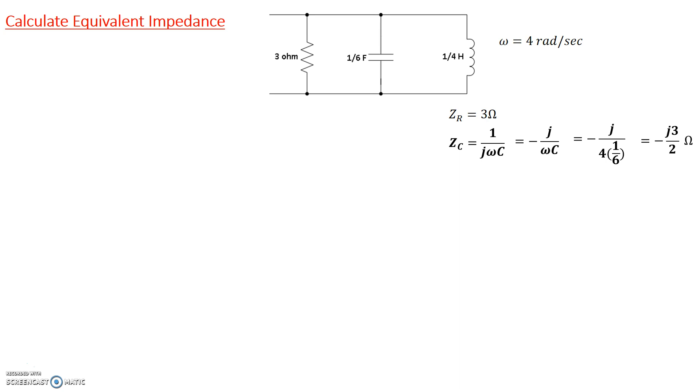Similarly, the impedance of the inductor is given by j omega L. Omega is 4, L is 1/4, so we get j 1 ohm. Now we have the individual impedances for these different elements.